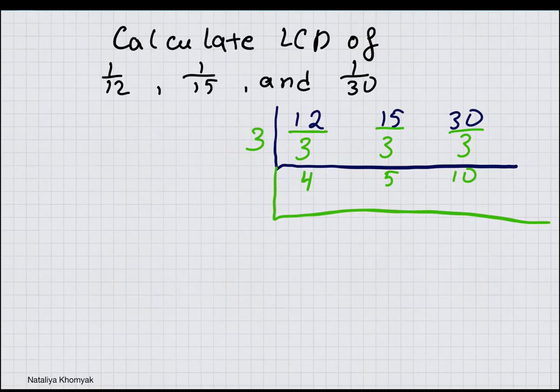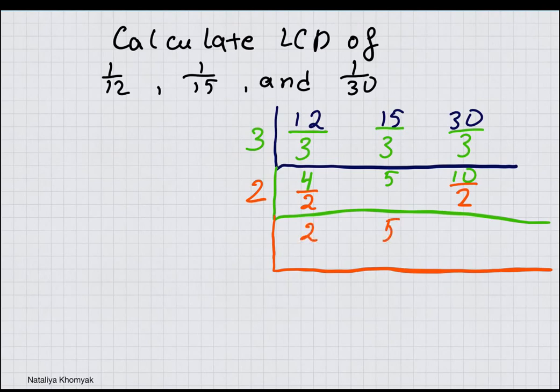There is no number that will go into all of them at the same time, but I know that 4 and 10 both can be divided by 2. Whatever goes in denominators goes on the outside. First fraction will reduce into 2, then we have 5, and then we have another 5.